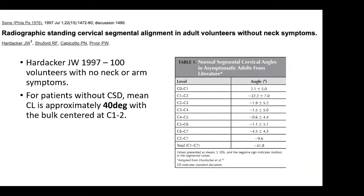This is a classic study from 1997 that looked at 100 normal volunteers without any cervical, neck, or arm problems. They found that the average cervical lordosis is about 40 degrees, and most of this was centered at C1 and C2. So when we're doing C2 to C7 measurements for cervical lordosis, we have to recognize that we're leaving out an important component of cervical lordosis at C1-C2, and that should be taken into account either separately or together with the other measurements.